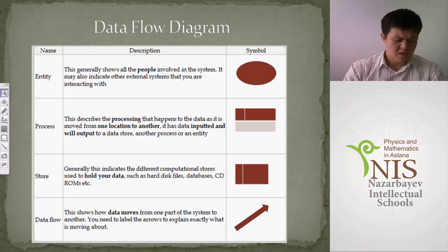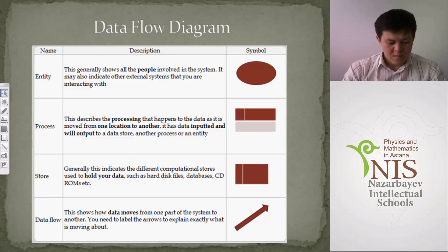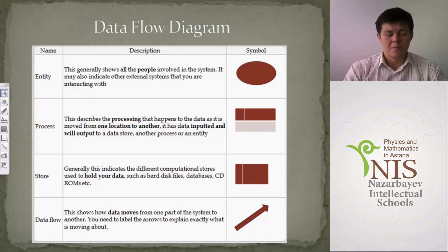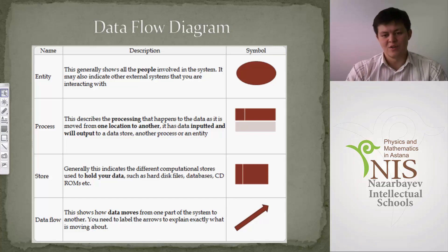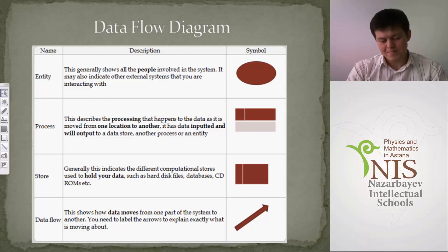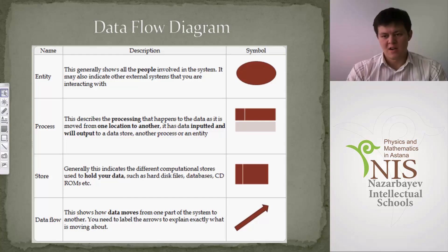DFD also has several levels. The first is called the flat DFD or DFD level 0 — a very general picture of the overall structure of the process, not detailed. Even a child can draw and explain a DFD level 0. But if you want to make it more detailed, you go to the main process, split it into smaller sub-processes, write a DFD for each, and put them together into one big DFD — this gives you DFD level 1. You can also create DFD level 2 for even more depth.